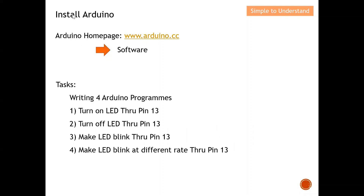First, I'm going to discuss how to install the Arduino program. This link here shows the Arduino home page — if you click on 'Software' I will demo how to install it. Next, I'll share how to write four simple Arduino programs under 10 minutes. The first task is to turn on the LED on the Arduino Uno board through pin 13. Pin 13 is connected to that LED — if pin 13 is 5 volts the LED will light on; if it is 0 volts the LED will not light.